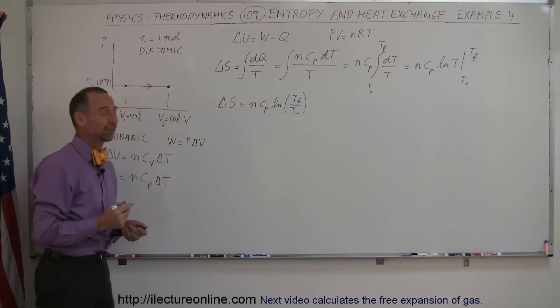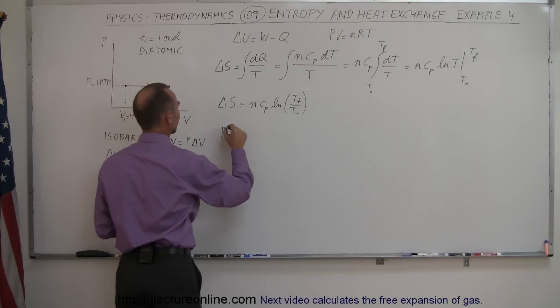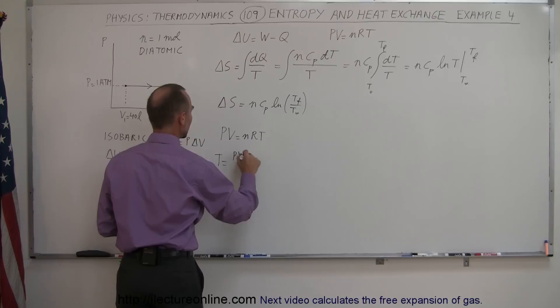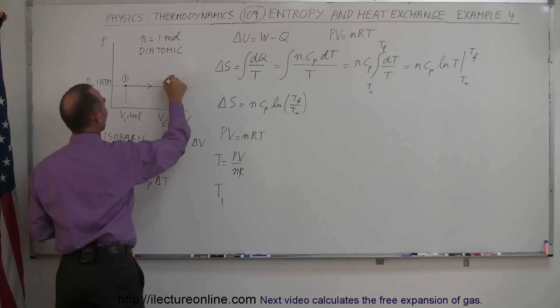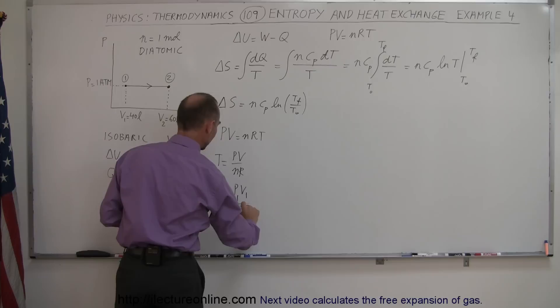Okay, so now we have to figure out what the temperatures are, and can we do that? Using our equation PV equals NRT, we say that T is equal to PV over NR, which means that temperature at the initial point, so this is our initial point, this is our final point right there, our initial point, is equal to pressure at that point, volume at that point, divided by N times R.